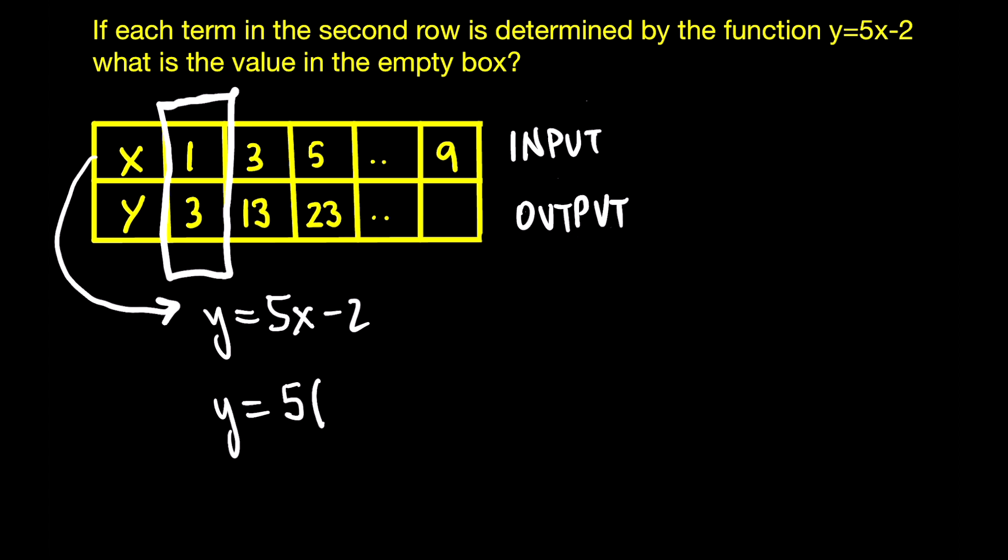So let's go ahead and do that. So we have 5 multiplied by 1 minus 2, and that gives us 5 minus 2, which is equal to 3. So if you look back at the grid, you can see that the value for x is 1, answer for y is 3, which is correct.